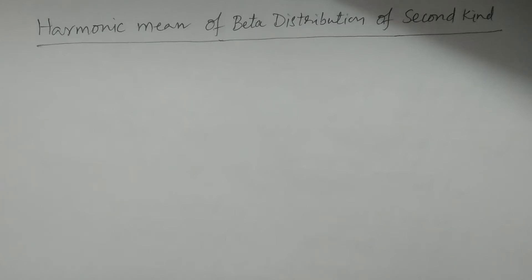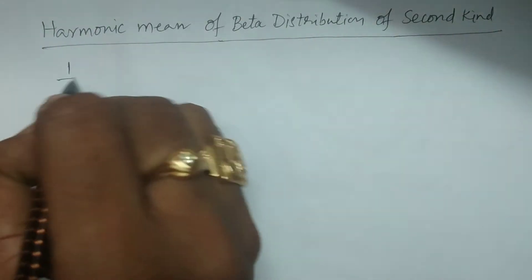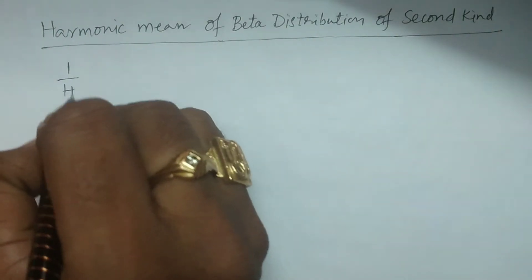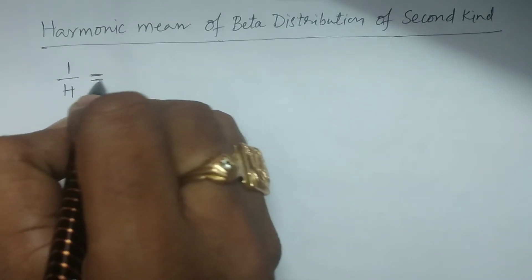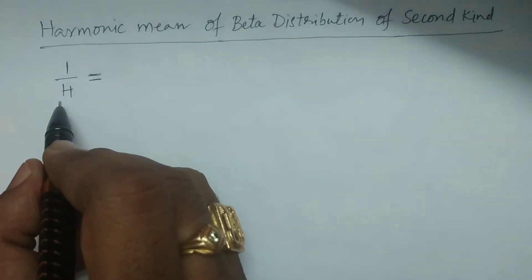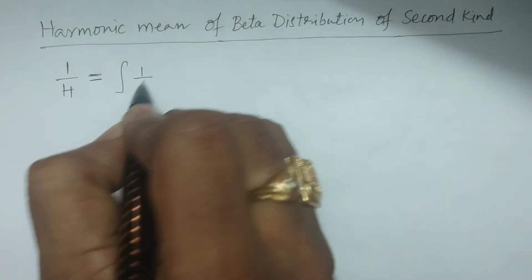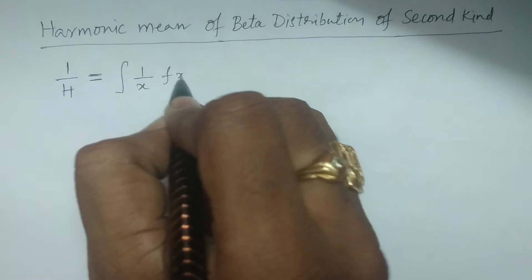Welcome to BSc Statistics students. In this lesson, I explain the harmonic mean of beta distribution of second kind. The formula for harmonic mean is: 1 by h is equal to the integral of 1 by x times f of x dx, where h is the harmonic mean.